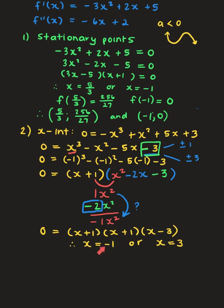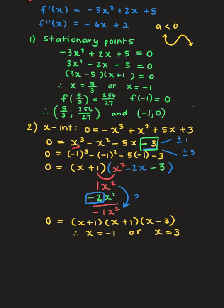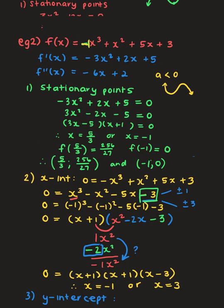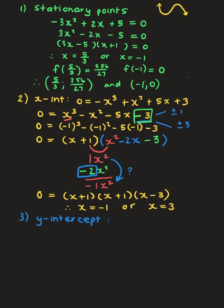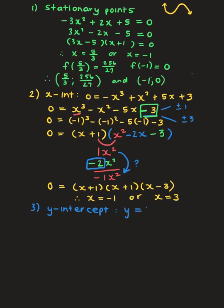The y-intercept: the constant d = 3, so the y-intercept is at y = 3. You can verify by substituting x = 0 — all other terms fall away and you're left with 3.